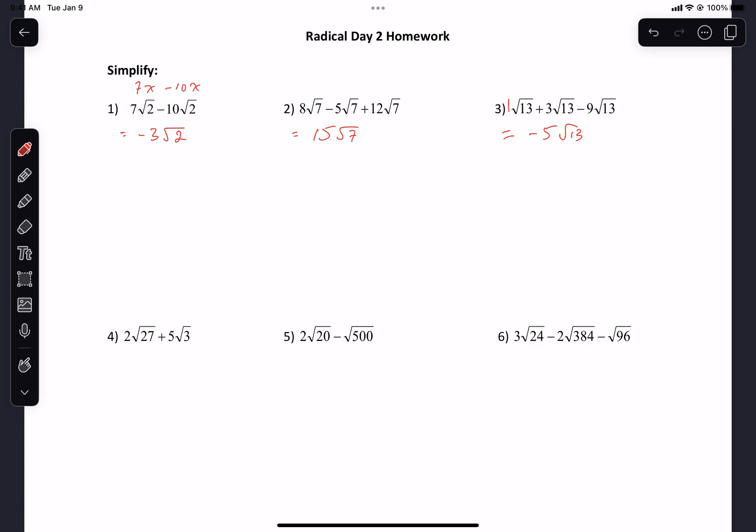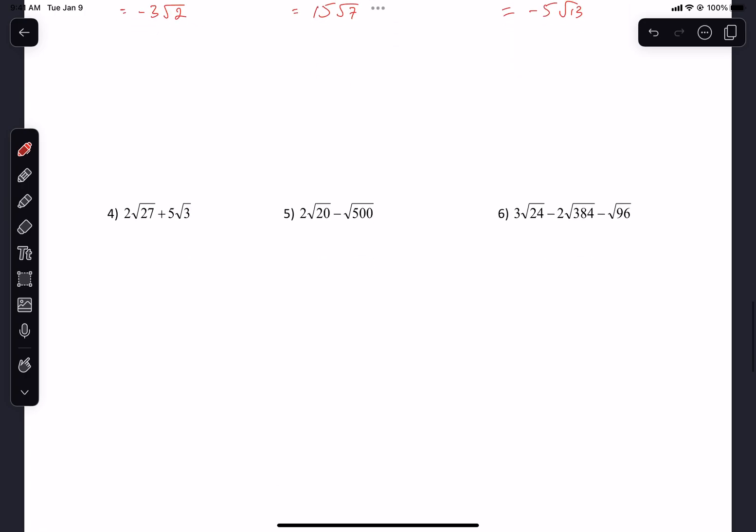Now this is maybe where you might start getting a little stressed because they don't match anymore. But we learned skills on Wednesday to make them match. How can I write root 27? 3 and 9. Root 3 times root 9. So I can get 2 root 9 times root 3. Root 9 times root 3 is the 27 plus 5 root 3.